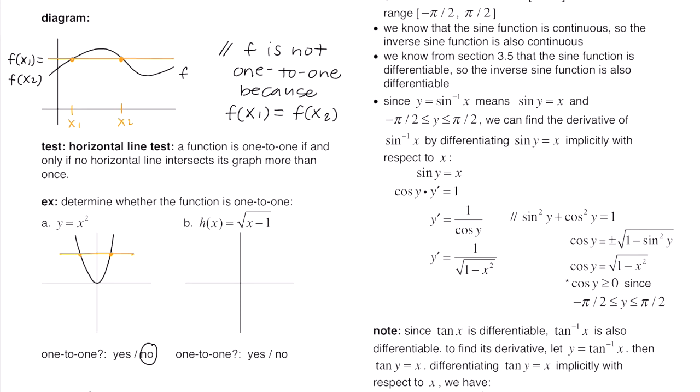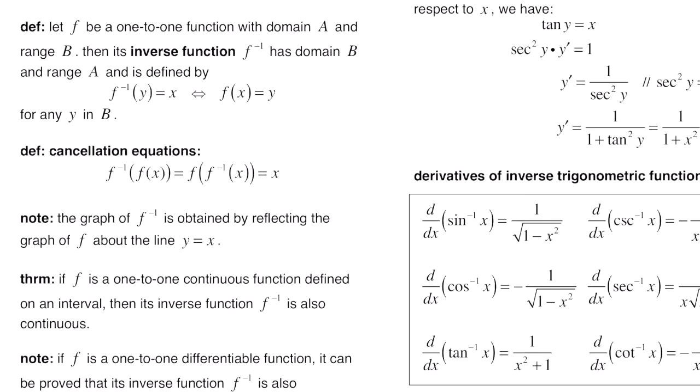For part b, we have the square root of x minus one. If you were to draw a horizontal line through the graph at any point, it will only hit the graph once. Therefore, when answering whether this graph is one-to-one, we would say yes.